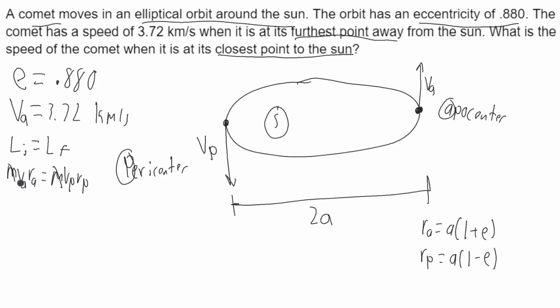The mass will cancel, and we'll get that V_A R_A is equal to V_P R_P. And we're solving for V_P, so I'll get that on its own side. V_P will be equal to V_A times R_A over R_P.